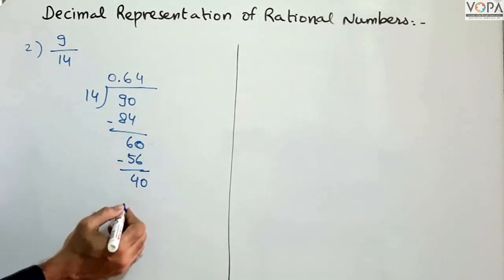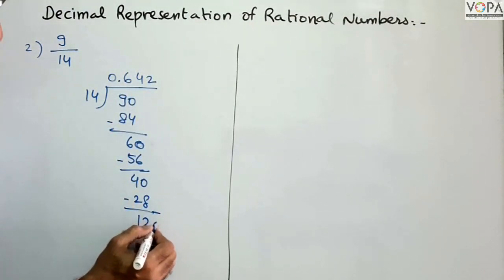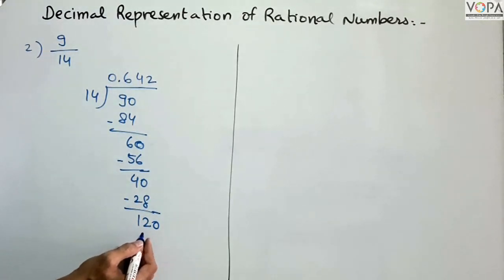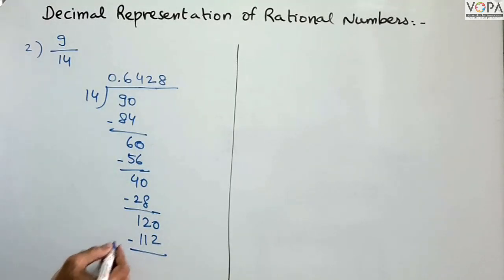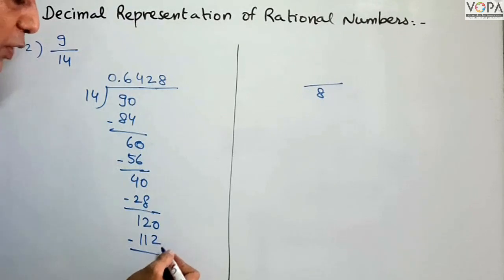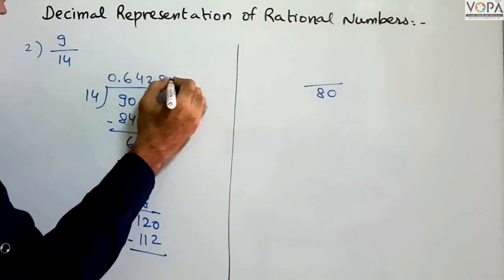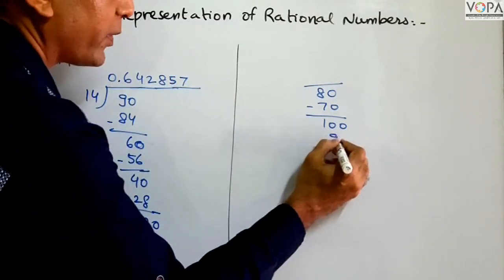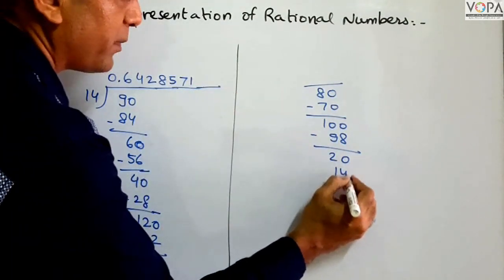We bring down a zero making 40. 14 times 2 is 28. 40 minus 28 is 12. We bring down a zero making 120. 14 times 8 is 112. 120 minus 112 is 8. We bring down a zero making 80. 14 times 5 is 70. 80 minus 70 is 10. We bring down a zero making 100. 14 times 7 is 98. 100 minus 98 is 2. We bring down a zero making 20. 14 times 1 is 14. 20 minus 14 is 6.